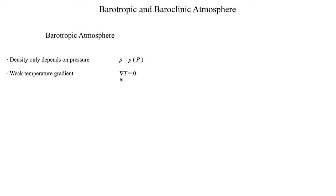Temperature is pretty much constant throughout the entirety of a barotropic atmosphere, which implies the temperature gradient is essentially zero — or if there is one, it's pretty weak. From the thermal wind relationship, if we have a weak temperature gradient, then the thermal wind vector is zero, which means our vertical wind shear in the atmosphere is also essentially zero. No horizontal temperature gradient means no vertical wind shear and no thermal wind — that is a characteristic of a barotropic atmosphere.